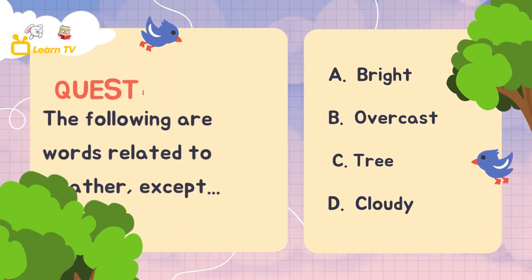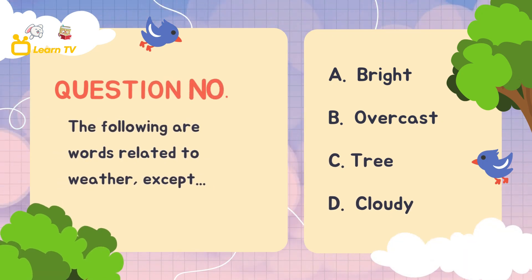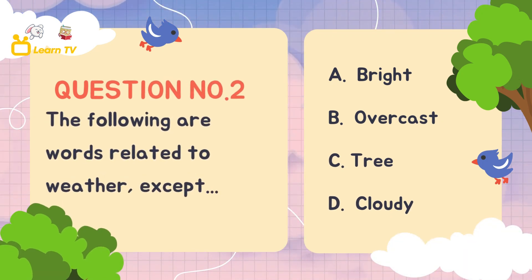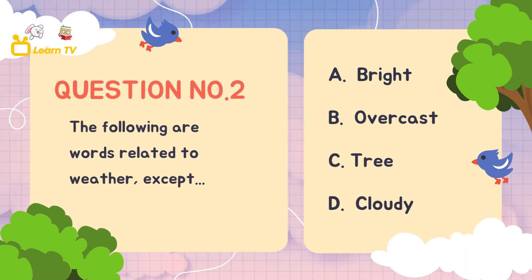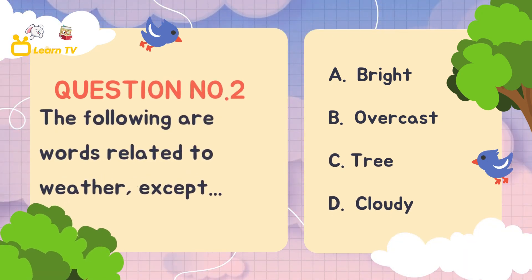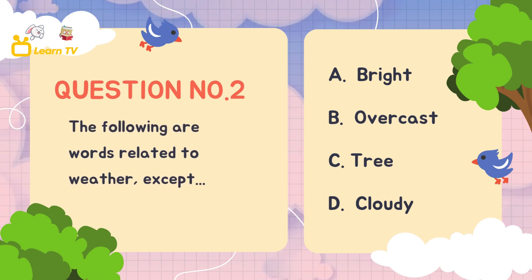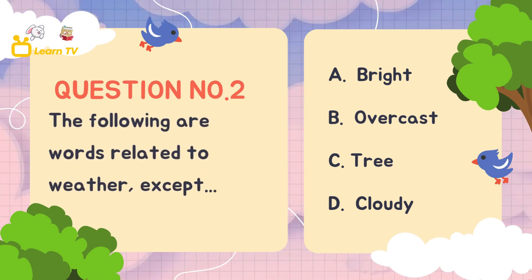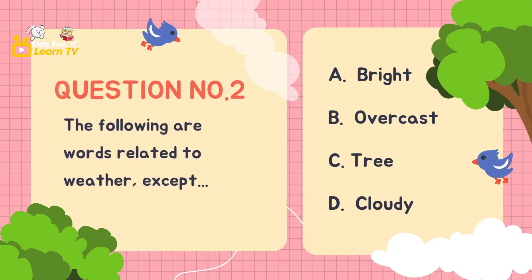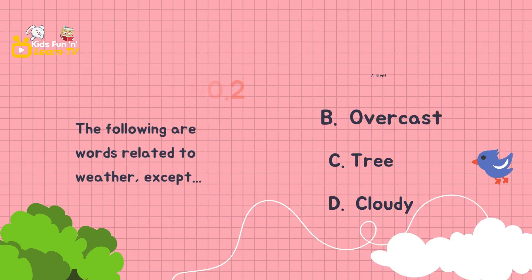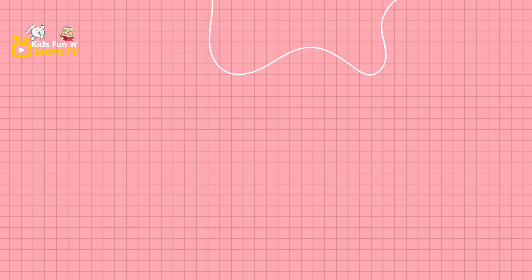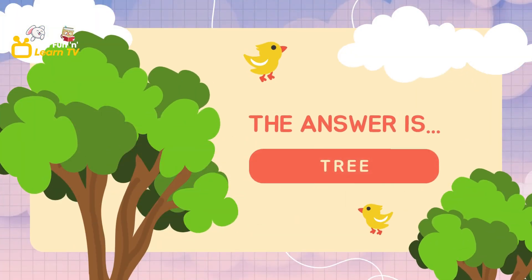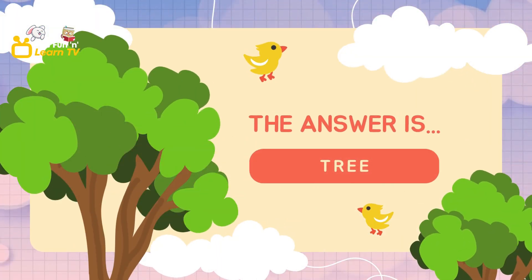Question number two. The following are words related to weather except: A. Bright. B. Overcast. C. Tree. D. Cloudy. The answer is tree.